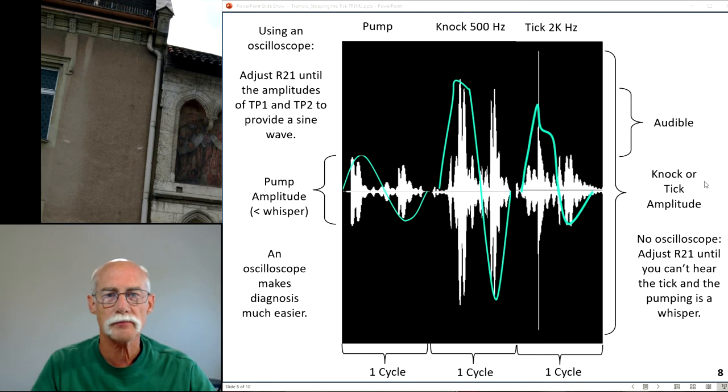We want to adjust for a sine wave. We don't want it to be too amplified because it starts flattening out, and that creates a knock sound. If it's over-amplifying, you'll get this shape here that you see on the oscilloscope, and that's the tick. It's about 2 kilohertz—that's audible.